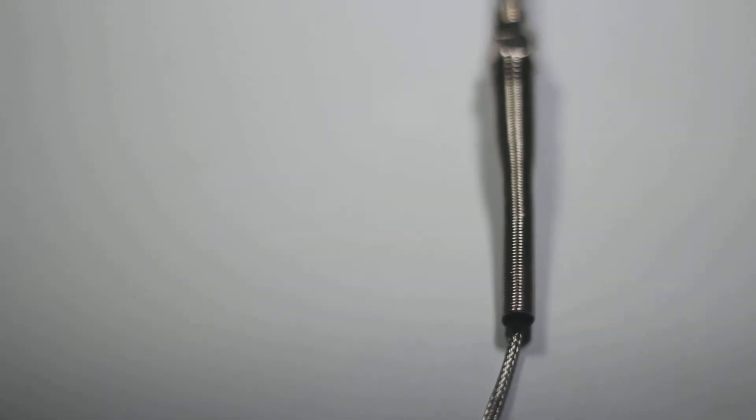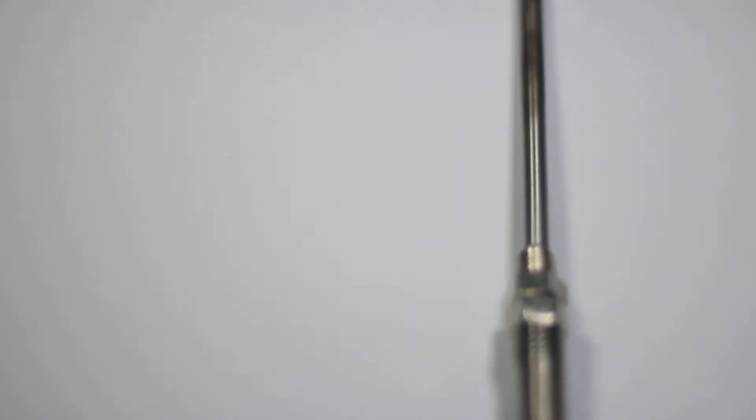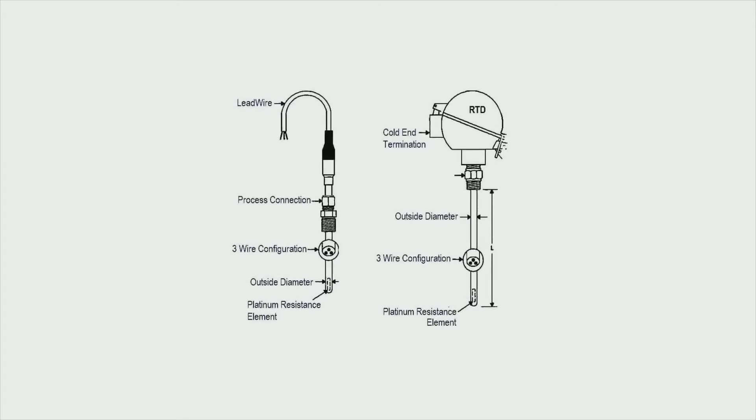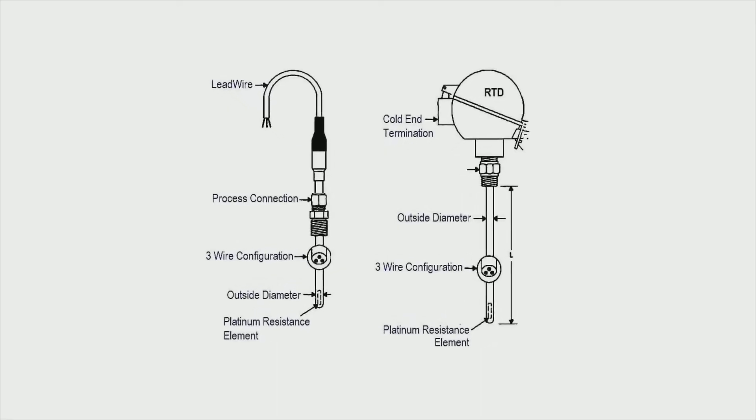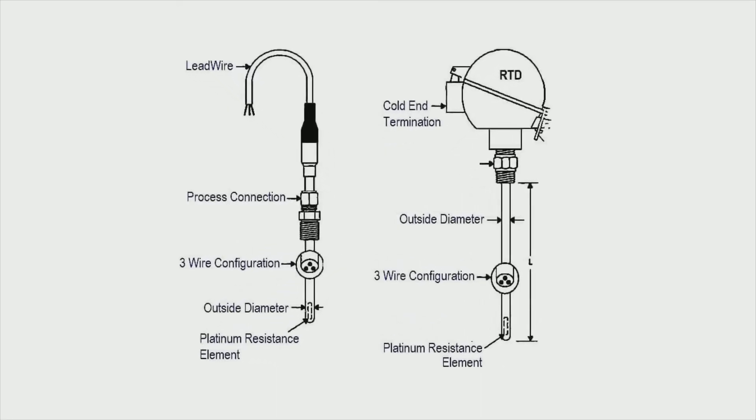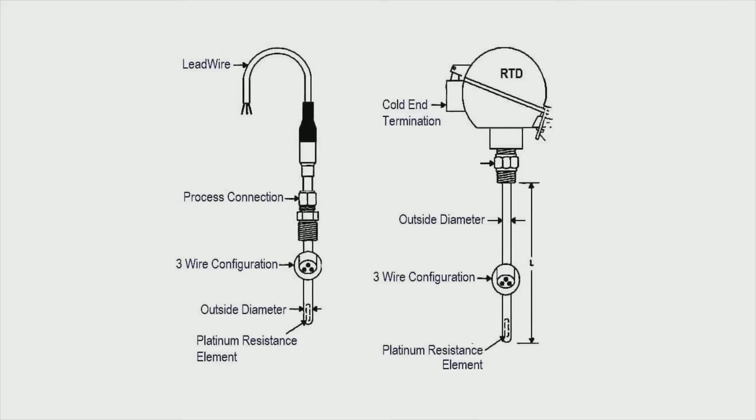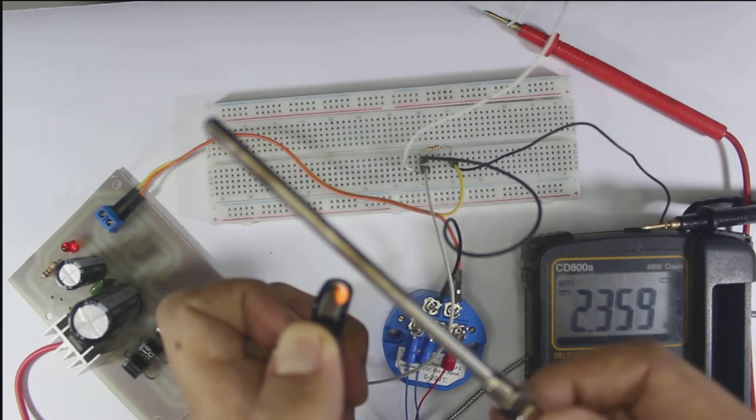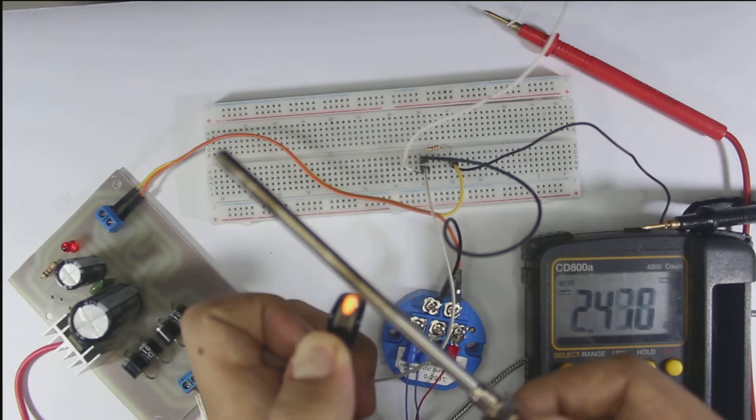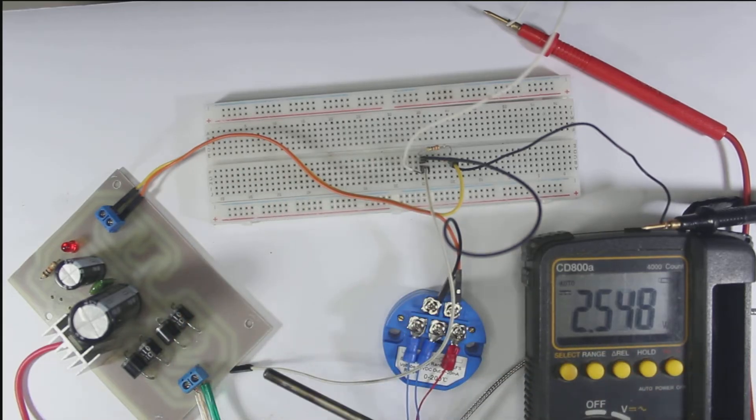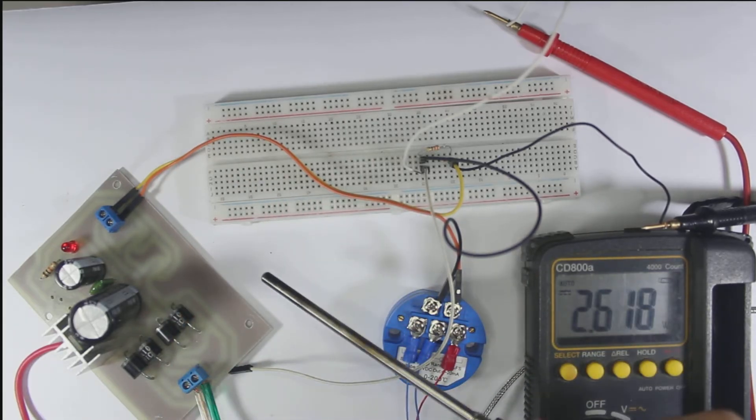PT100 is an RTD. RTD is resistance temperature detector. From its name we can guess how the sensor works. The sensor works by using the principle that the resistance of a metal changes as the temperature changes. Shortly, when the sensor gets hot and you measure the resistance, it'll give a different result unlike when you measure when the sensor is not hot or even cooled.